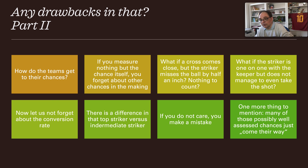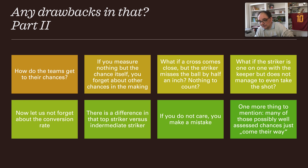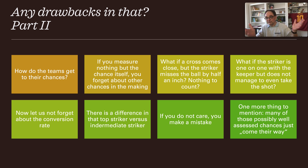What if the striker is one-on-one with the keeper but doesn't manage to even take the shot because the keeper nicks it off his feet in time? We should also not forget the conversion rate — there is a clear difference between a top striker and an intermediate or poor striker. And many of those chances just come their way without being created; the ball simply falls to their feet.